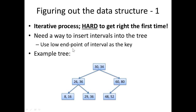So what we do is use the low endpoint of the interval as the key. Here's an example tree — this is a search tree where the keys are the lower endpoints of the intervals. If we look at an in-order traversal of this tree, we'll see that it gives us the endpoints in order: 8, 16, 26, 36, 29, 36, 30, 34, 48, 52, 60, 80. The in-order traversal gives us these intervals in order, which is kind of nice.